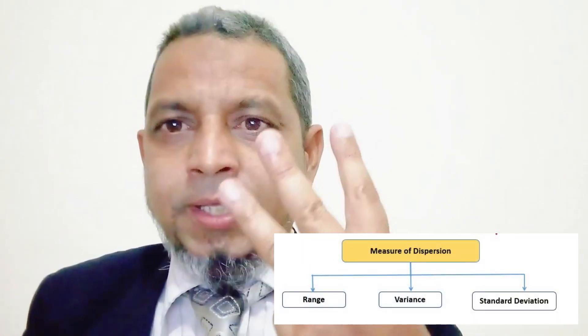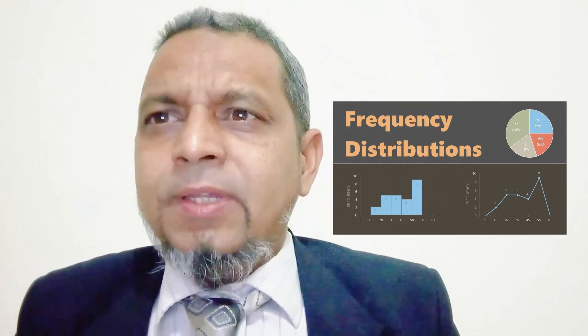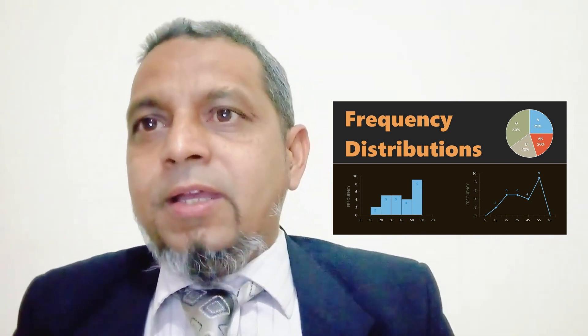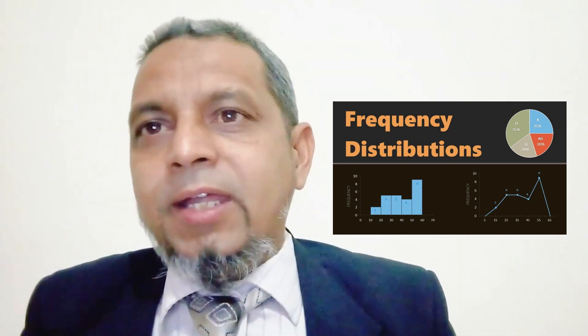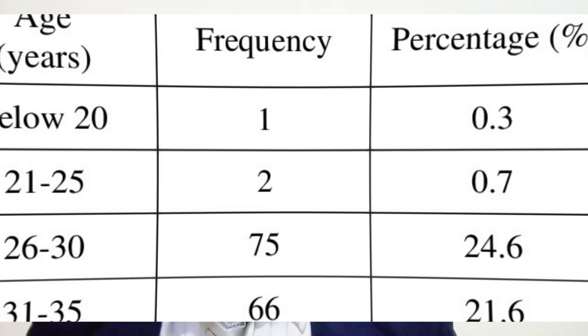Point number three: measure of distribution, or measure of frequency distribution. The frequency distribution refers to the quantity of times a data point occurs. Alternatively, it is a measurement of how often a data point falls or occurs. Consider a set of data: male, male, female, female, female, others. The distribution of this data can be classified as a count, frequency, percentage, and so on.